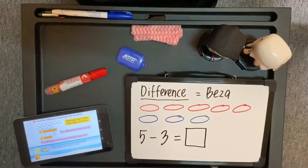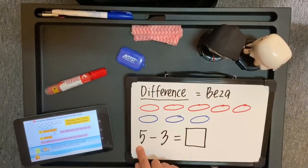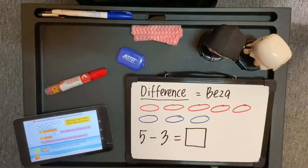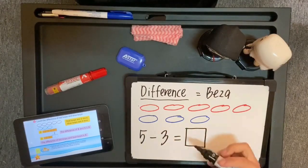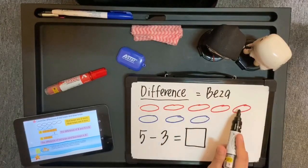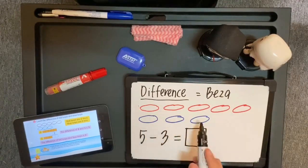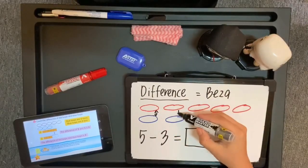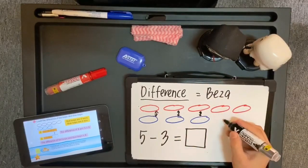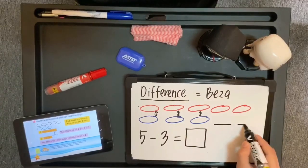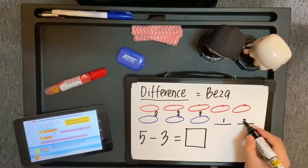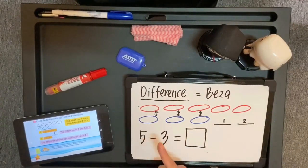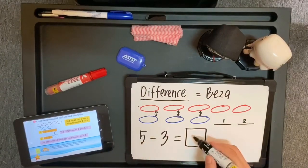3 pula di belakang kerana 3 lebih kecil dari 5. Untuk menolak, nombor besar tolak nombor yang kecil. Tak boleh terbalik. Gelong merah ada 1, 2, 3, 4, 5. Gelong biru pula ada 1, 2, 3. Ini ada sama — pasangkan 1 dengan 1, satu lagi sama, satu lagi sama. Jadi, yang tiada? 1, 2. Beza di antara gelong merah dan juga gelong biru ialah 2.